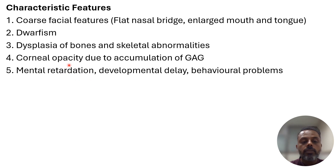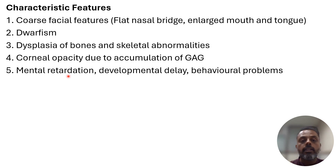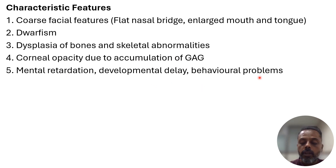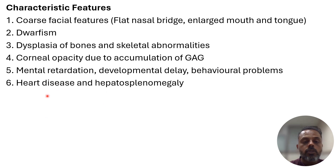Mental retardation is mainly due to the accumulation of heparan sulfate, because it is not degraded properly. Accumulation of other glycosaminoglycans results in mesenchymal problems, developmental delay, and behavior problems. Some are also associated with heart disease — particularly problems with the heart valves resulting in development of murmurs — as well as hepatosplenomegaly.